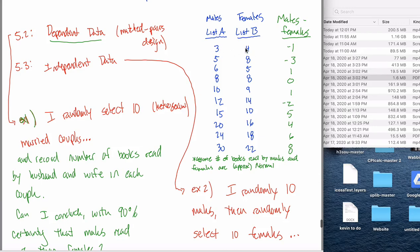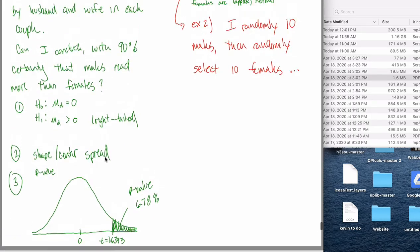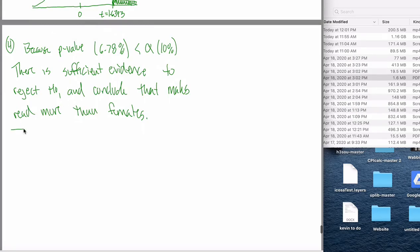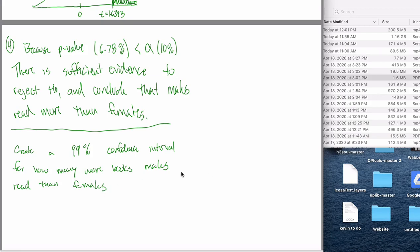This negative one is this three minus this four, this positive five is this 15 minus this 10, and so on. In the last example, we tried to figure out if we can conclude that males read more than females. Maybe now I can create a, I don't know, let's go 99%, sure, percent confidence interval for how many more books males read than females. Not great English, but hopefully close enough that you can understand what's going on. The key thing here is we're making a confidence interval this time.